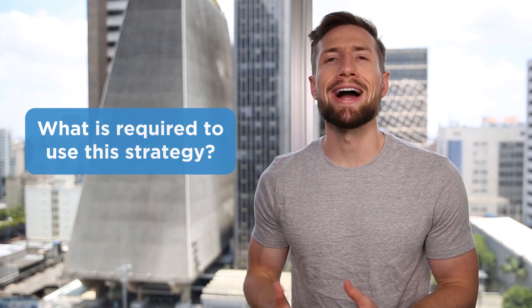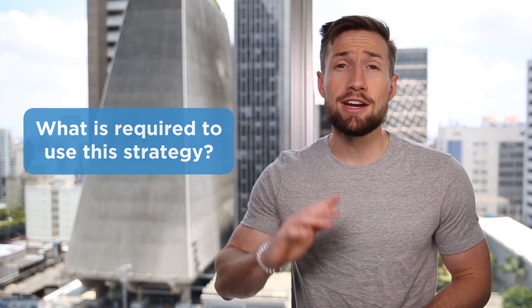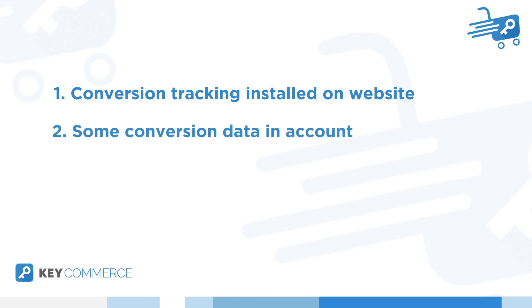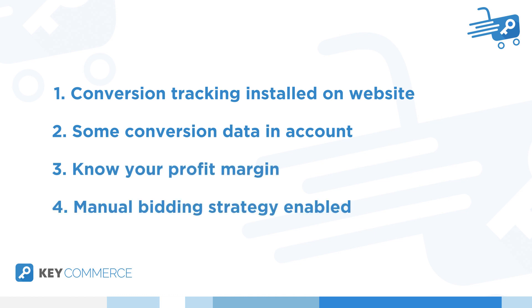So what's required to use this strategy? You need four things. One: conversion tracking installed on your website through Google Ads. Two: enough conversions tracked already. Three: know your profit margins for your products or for your entire store. Four: switch over your campaign bidding strategy to manual.